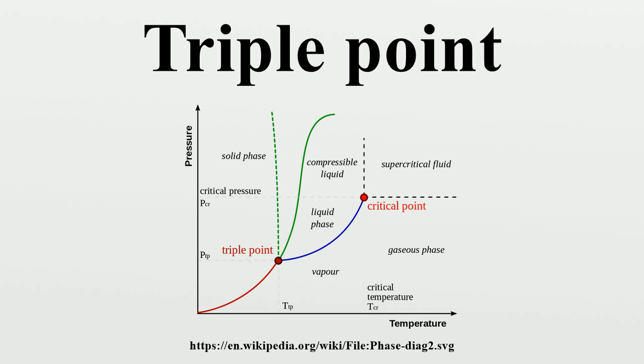The purity of these substances can be such that only one part in a million is a contaminant, called 6-9s, because it is 99.9999% pure.